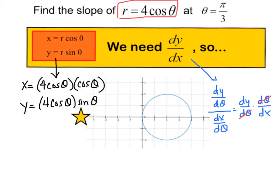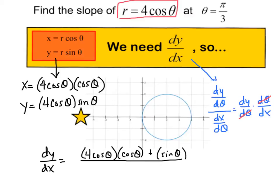And take a look at what happens. The d-thetas cancel and I get dy/dx. So I'm going to just find the derivative of y with respect to theta and divide it by the derivative of x with respect to theta. Now, this can get a little bit tedious, and you'll see that the reason is because it's going to require product rule. Finding the derivative, I'm going to have a first and a second, I'm going to have to do product rule, and I'm going to have to do it twice.